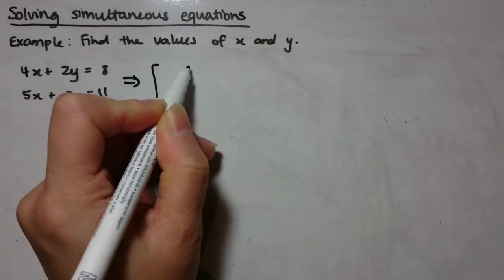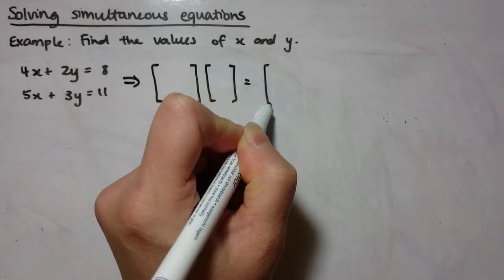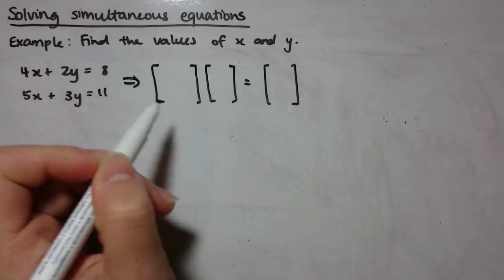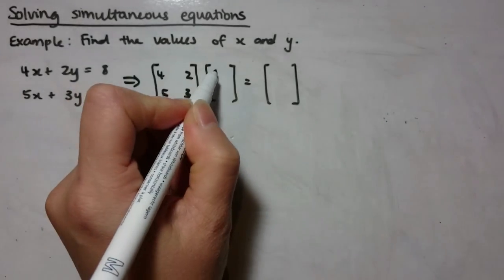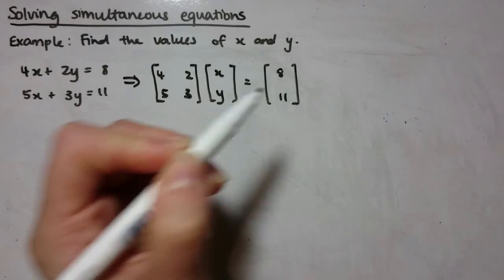So we just need to rewrite these as matrices first, and we always end up with an equation that looks like this. We've got coefficients in here, so 4, 2, 5, and 3. We've got our unknowns sitting in here, and then the right-hand side goes over here.